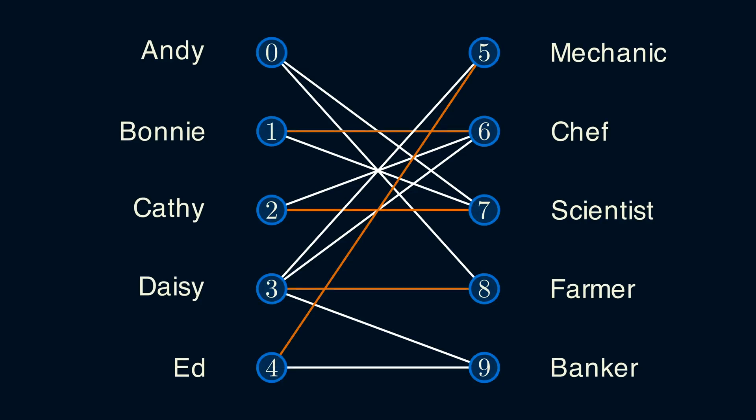Let's go back to our example before and see what we could have done differently. Right now, Andy has no job, but there's also no banker. Is there some way to switch some assignments around so that Andy gets a job? How about we match someone else to Banker, like Daisy? Then if we do that, she can no longer be a Farmer, so that edge gets unmatched, so then we can match Andy to Farmer.